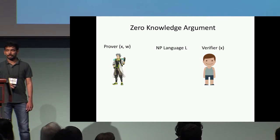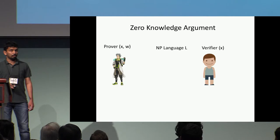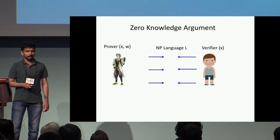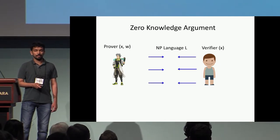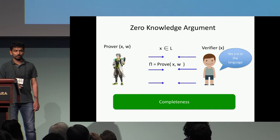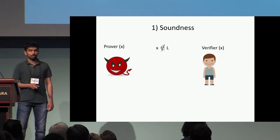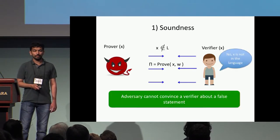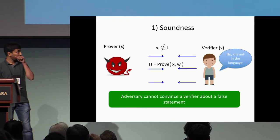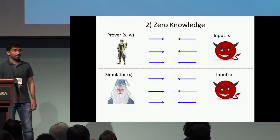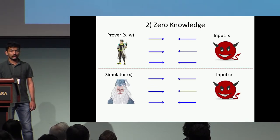Let's recall the definition of a standard zero-knowledge argument. Consider a prover and a verifier who both have access to a statement X, and the goal of the prover is to convince the verifier that X is in some NP language L. At the end of the protocol, the verifier is convinced X is in the language. Soundness states that a malicious prover should not be able to convince the verifier about a false statement. The zero-knowledge property states that an adversarial verifier cannot distinguish whether it's interacting with an honest prover with access to the witness, or a simulator without the witness.